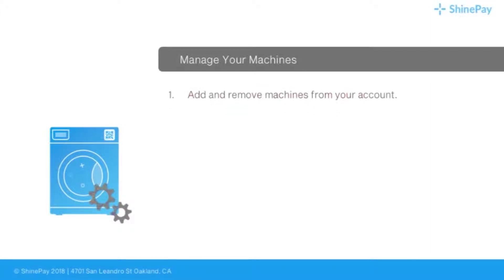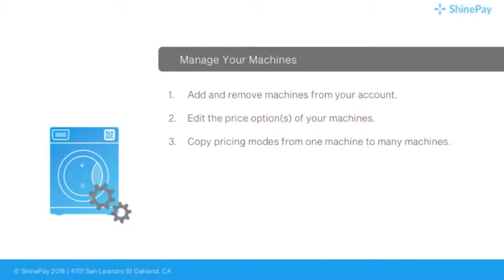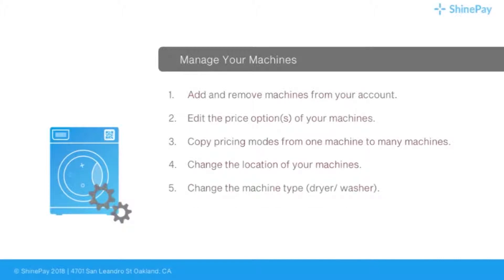You can add and remove machines from your account, edit the price options, copy pricing modes from one machine to many machines — this is very helpful in case you have to update multiple machines. You don't have to edit every machine. You can just edit one machine, copy the new pricing mode, and apply that to multiple machines. And then you can change the location of your machines, change the machine type, and update coin capacity.